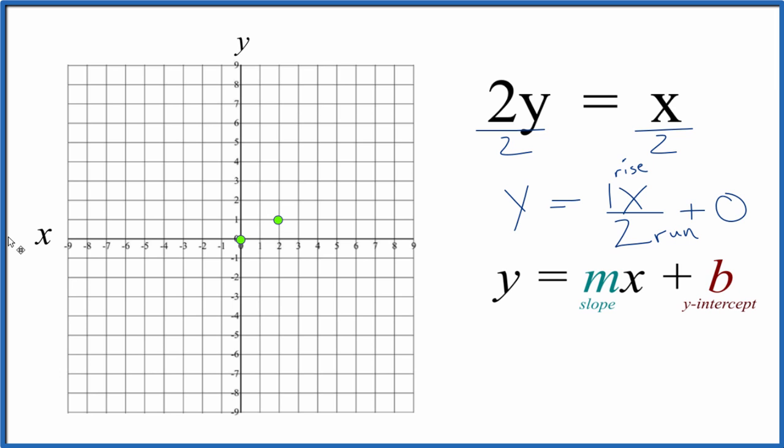We could do it with two points but let's keep going. We have 1 that we're going to rise to the right 1, 2 and there we have those three points there.